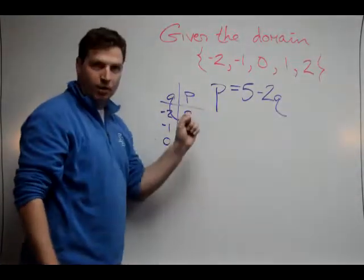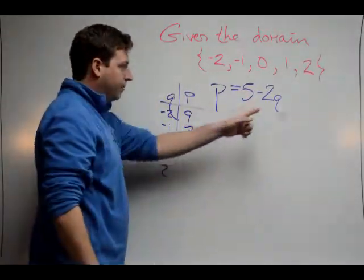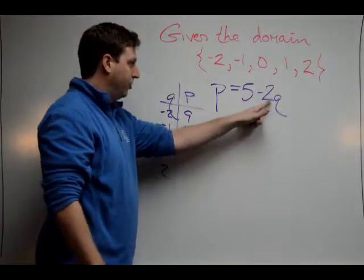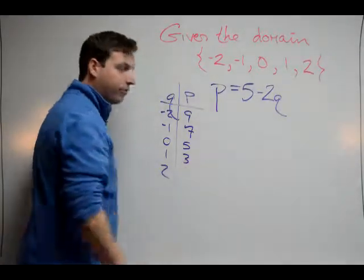When I plug in 0, I get 0, so I'm just left with 5. When I plug in 1, negative 2 times 1 is negative 2 plus 5, giving me positive 3.